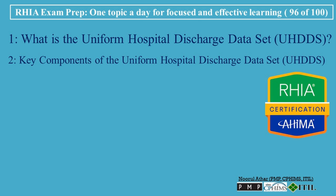The UHDDS includes a core set of data elements that provide a comprehensive view of a patient's hospital stay. The first key component is Patient Demographics, which includes essential information about the patient such as their age, gender, race, ethnicity, and place of residence. Collecting demographic data helps in analyzing healthcare disparities and understanding how different populations utilize hospital services.